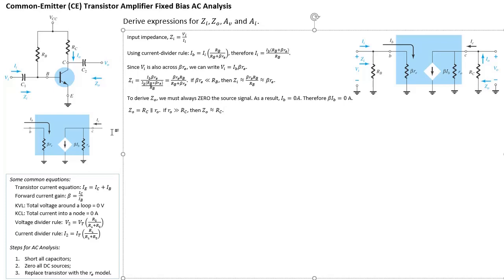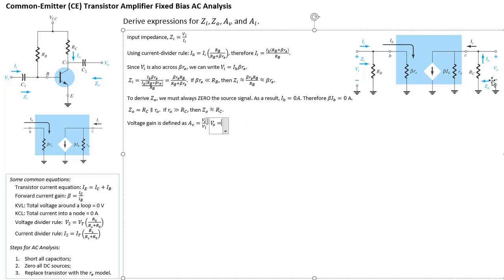Now we need to figure out AV and AI. AV, the voltage gain, is defined as VO divided by VI. Using Ohm's law, VO equals negative IO times ZO — the negative sign because VO is positive pointing up, so the current must be pointing down, opposite to IO. And VI equals II times ZI.